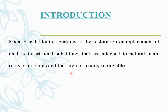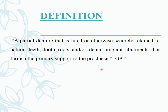The FPD pertains to the restoration and replacement of teeth with an artificial substitute that is attached to natural teeth, roots, or implants, and is not removable. According to the GPT — the Glossary of Prosthetic Terms — a fixed partial denture is a partial denture that is cemented or otherwise securely retained to natural teeth, roots, or dental implant abutments that furnish the primary support to the prosthesis.